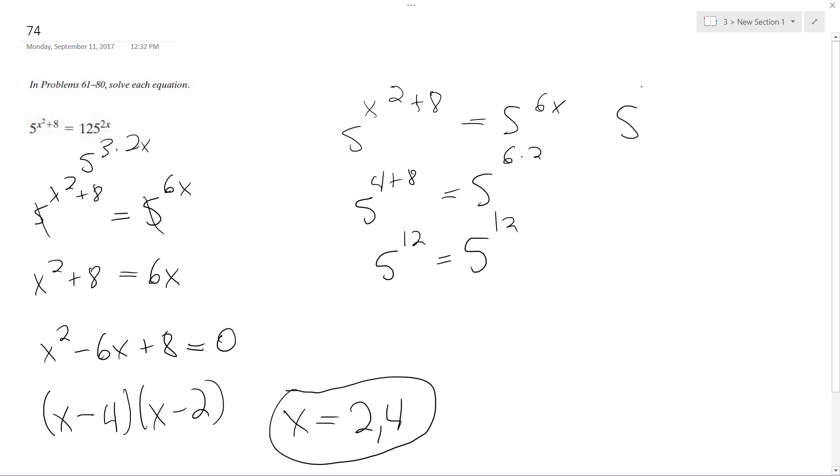What about 4? So 5 raised to the 16 plus 8 is equal to 5 raised to the 6 times 4. 5 raised to the 24 is equal to 5 raised to the 24. That's it. Cool.